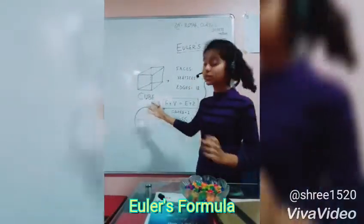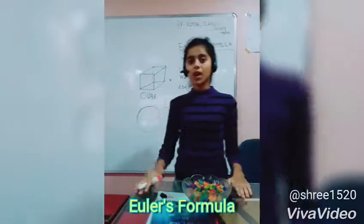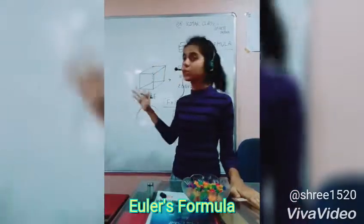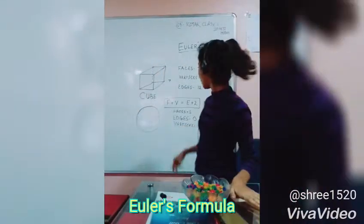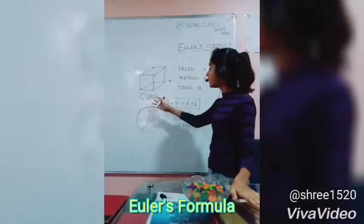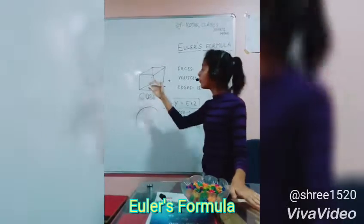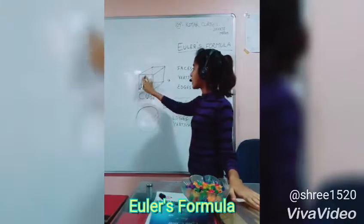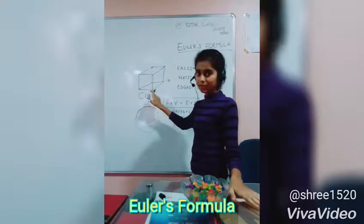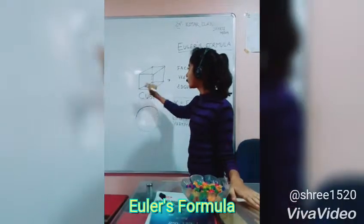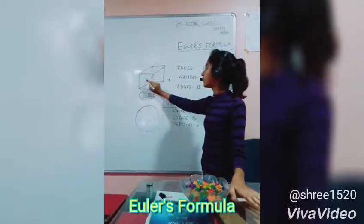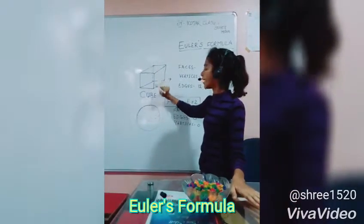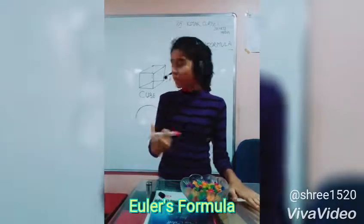First, we talk about cubes. You are very familiar with the 3D shape cube. Faces are the flat surfaces. You can see there are 1, 2, 3, 4, 5, and 6 — so there are 6 faces.